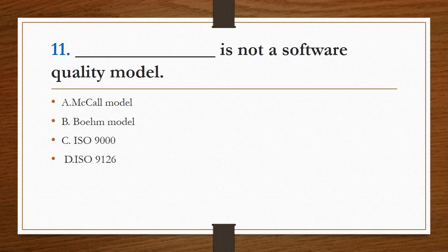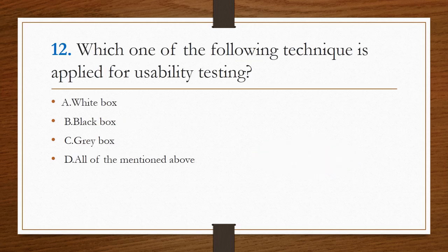Which of the following is not a software quality model? Four models are given. Among them, ISO 9000 is not a software quality model. So option C is the right answer.